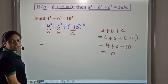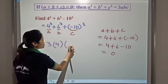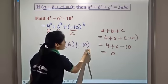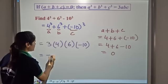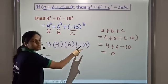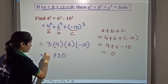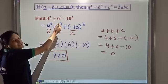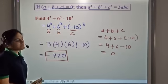So a cube plus b cube plus c cube is 3abc. So 3 into a (which is 4) into b (which is 6) into c (which is negative 10). Don't get it wrong by putting 10 here — we have a negative sign. 3 into 4 is 12; 12 into 6 is 72; 72 into 10 is 720. So the answer is negative 720. You can also verify it by calculating the cube of 4, the cube of 6, the cube of 10, adding the first two and then subtracting — we will get the same answer.